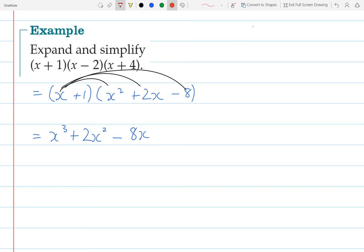And then I'm going to go through and times everything by the second half of the bracket, which is plus 1. And so that gives me plus x squared plus 2x minus 8.